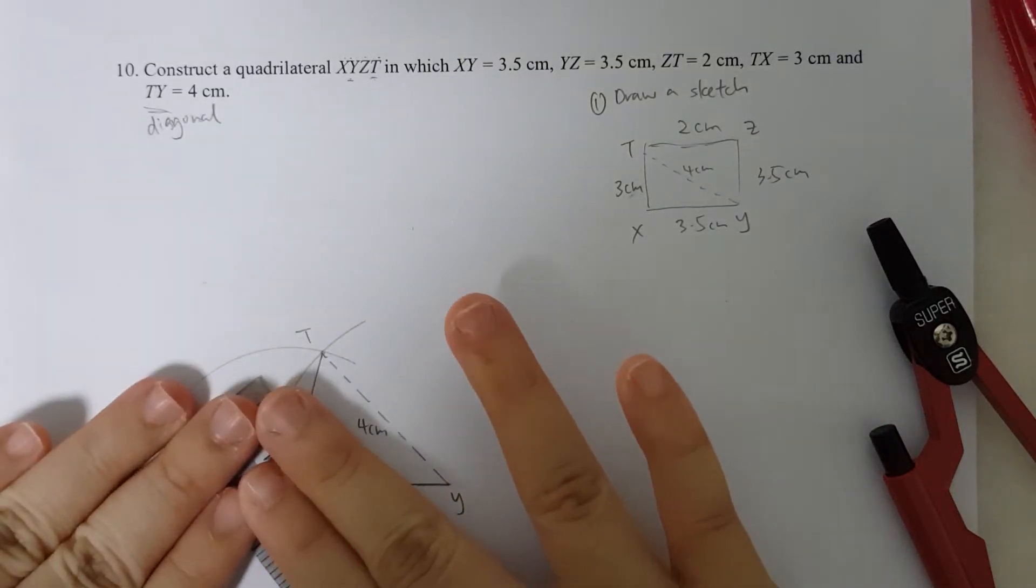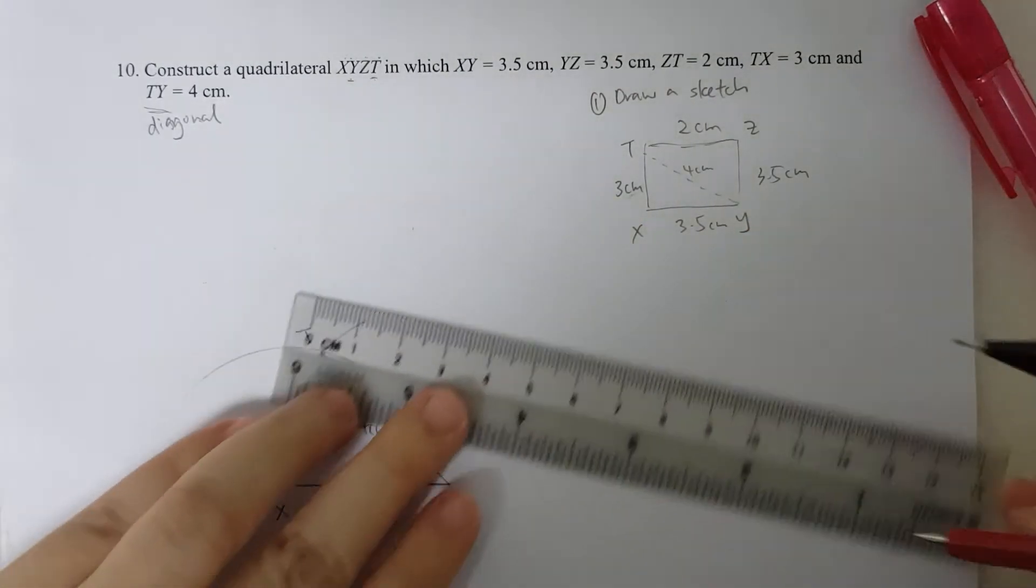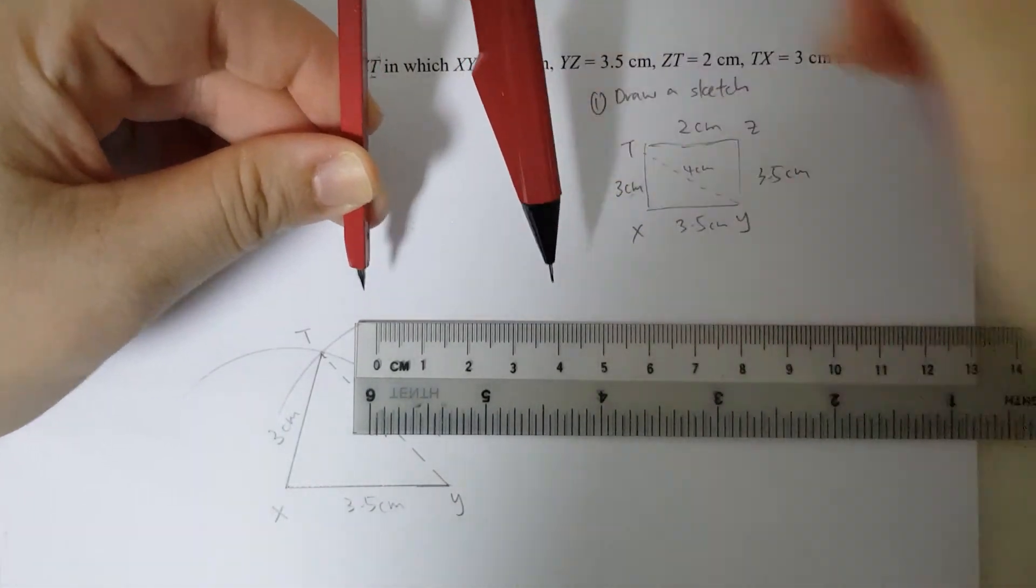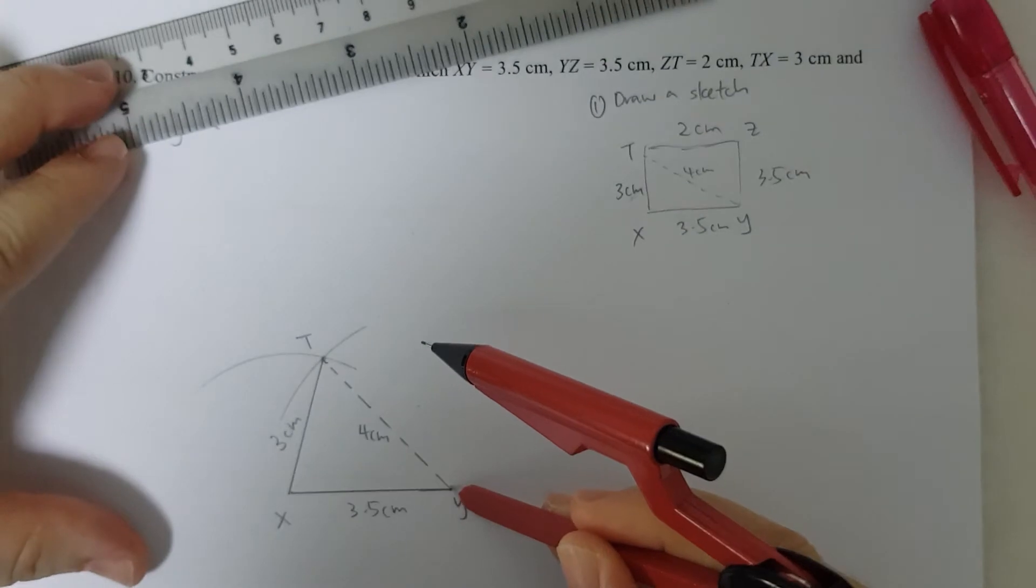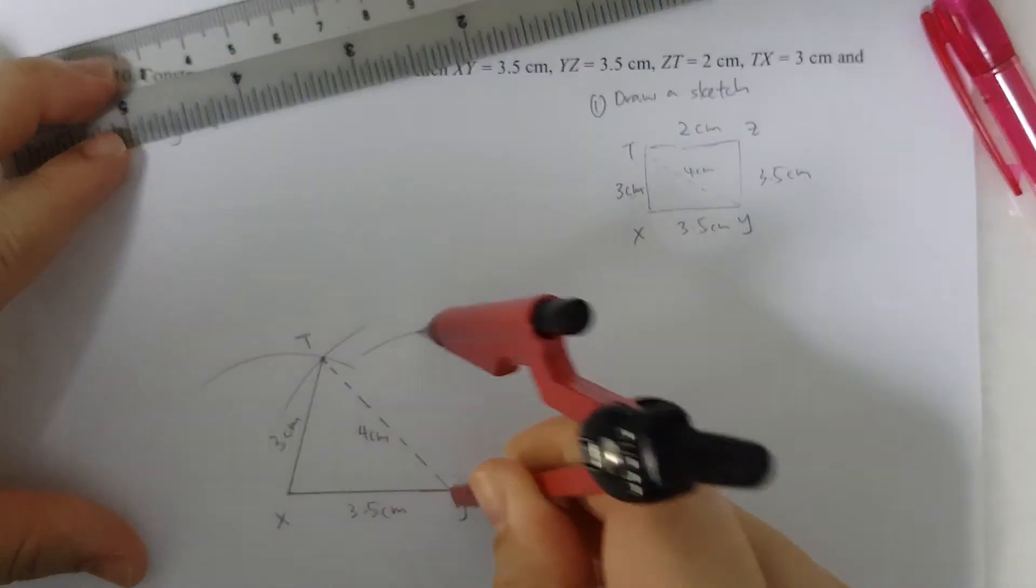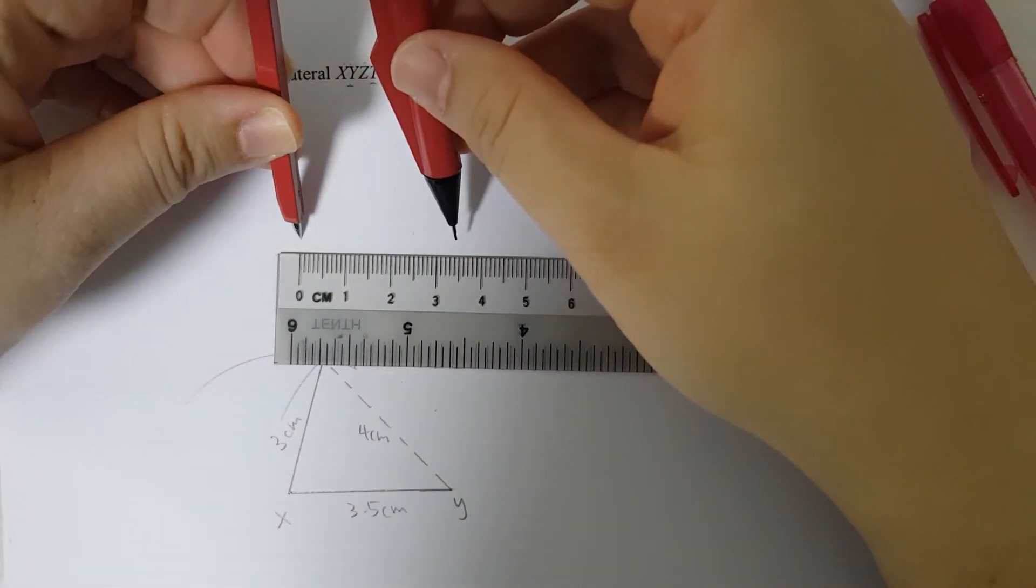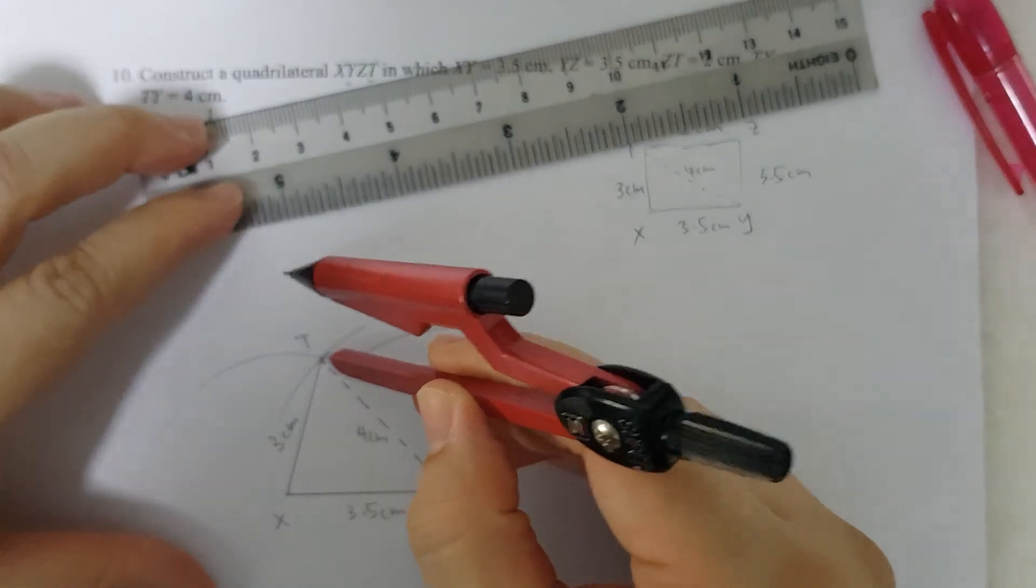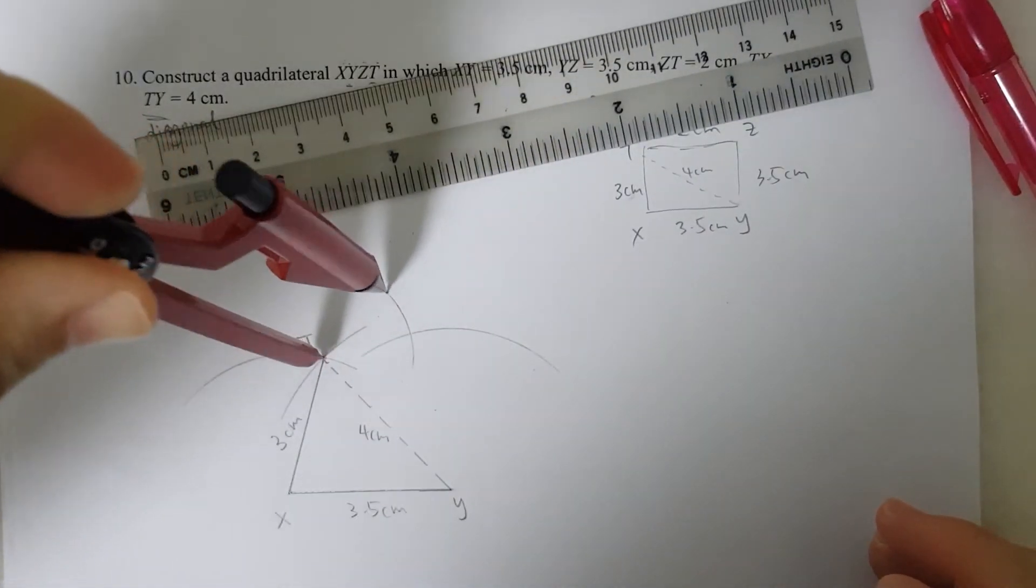It's like another triangle all together with TY as the base, and then I get the third point on the triangle by using my compass. So YZ is 3.5cm. I'll label 3.5, I'll draw the arc. And then TZ is 2cm. So let me measure and find 2cm. I'll put the metal tip at T to draw arc.